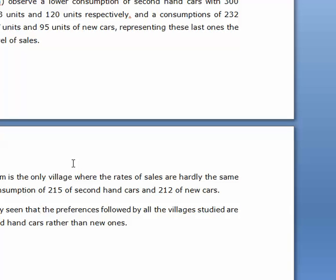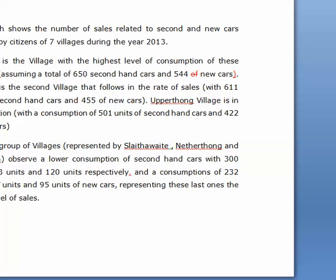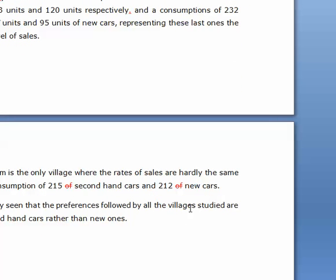Longyi Farm is the only village where the rate of sales are hardly the same, with a consumption of 215 — delete 'of secondhand cars' and 212 new cars. Delete 'of' there again. 'It is clearly seen that the preferences followed by all the villages studied are for secondhand cars instead of new cars.' That would improve this sentence. I'm sorry about some of the essay being cut out, but this was very good so I only needed to make very few changes. Very good use of brackets — I'm happy with that. Overall, this was fantastic work, Isabel. I hope that you're learning a lot, and I can definitely see improvements in both your essays. I very much look forward to seeing more of your essays in the future. Thank you very much.